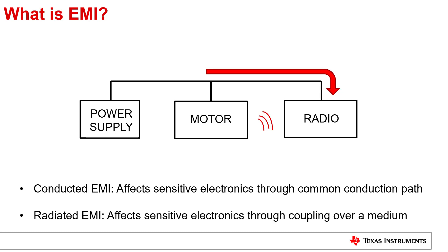Electromagnetic interference can manifest itself in two forms. As illustrated by this diagram, the sensitive system — which in this case is the radio — is affected through conductive means by the interfering motor, since they both share the same outlet for power. The motor also affects the working of the radio through electromagnetic radiation that's coupled over the air and picked up by the radio's antenna.